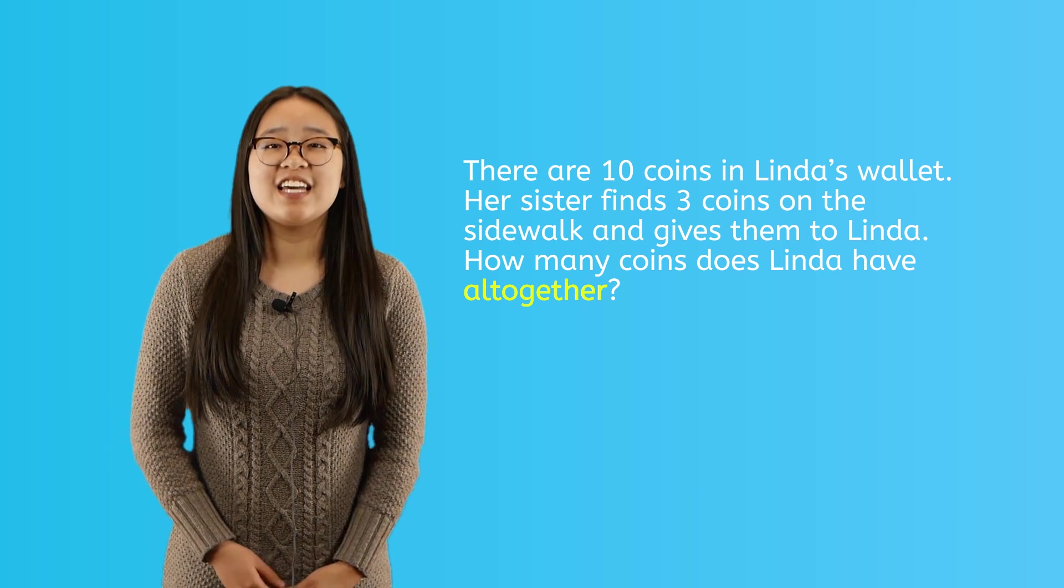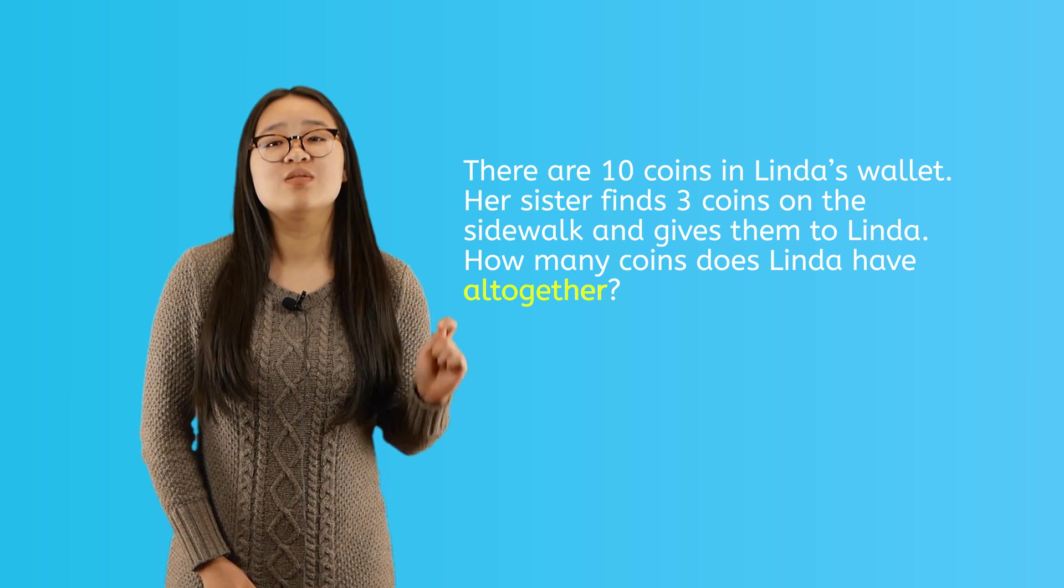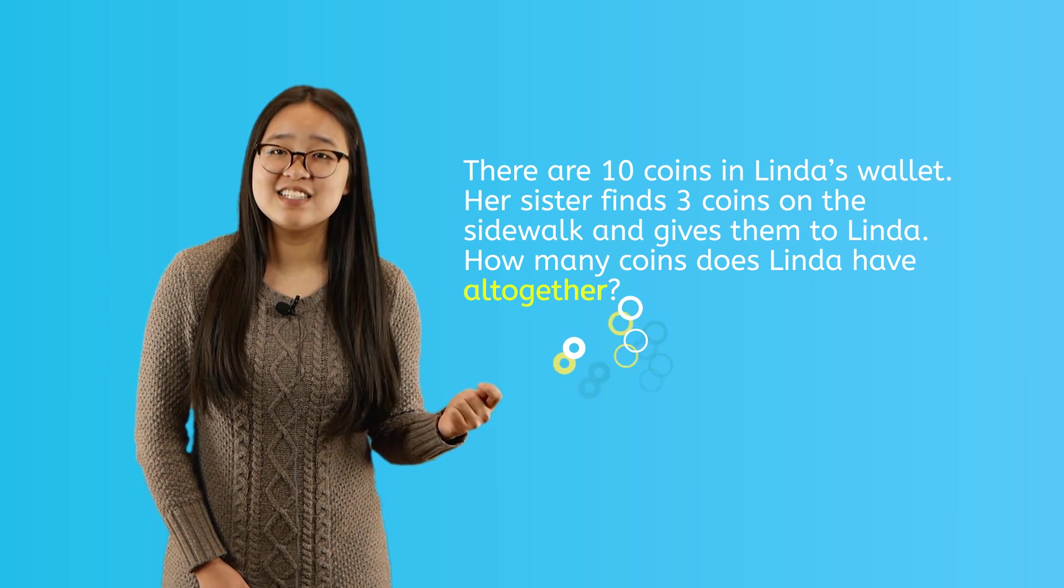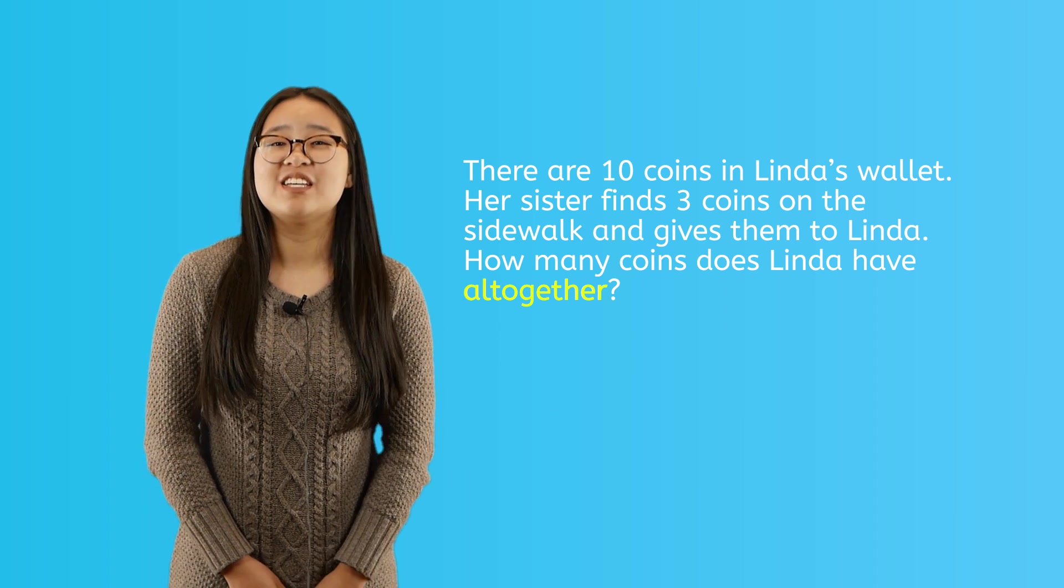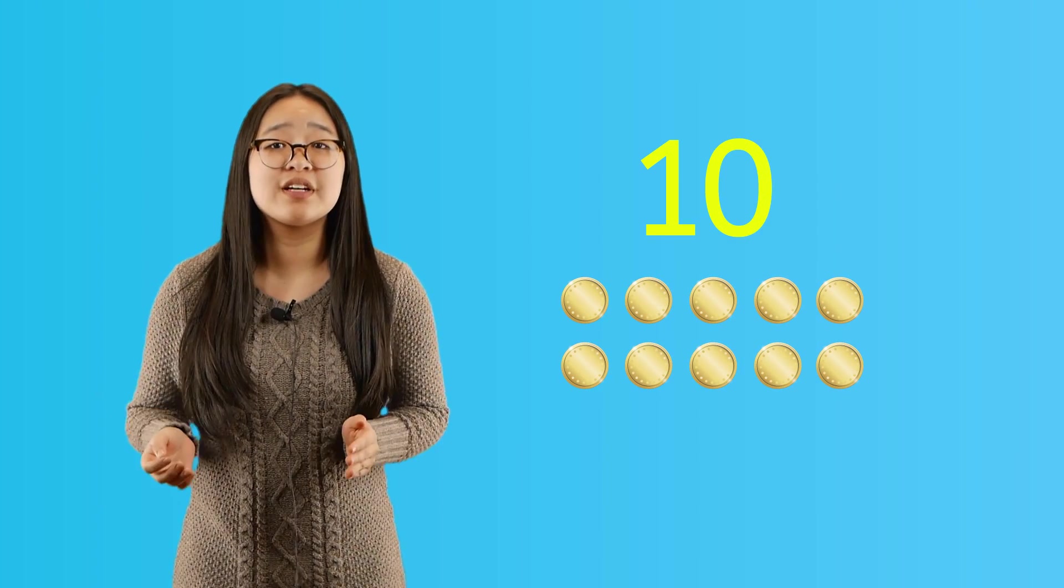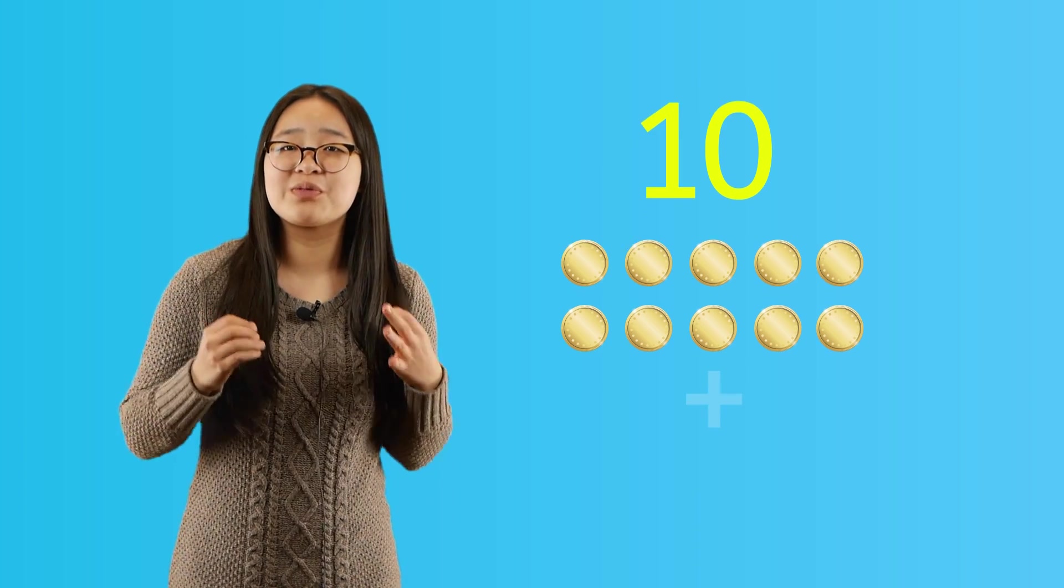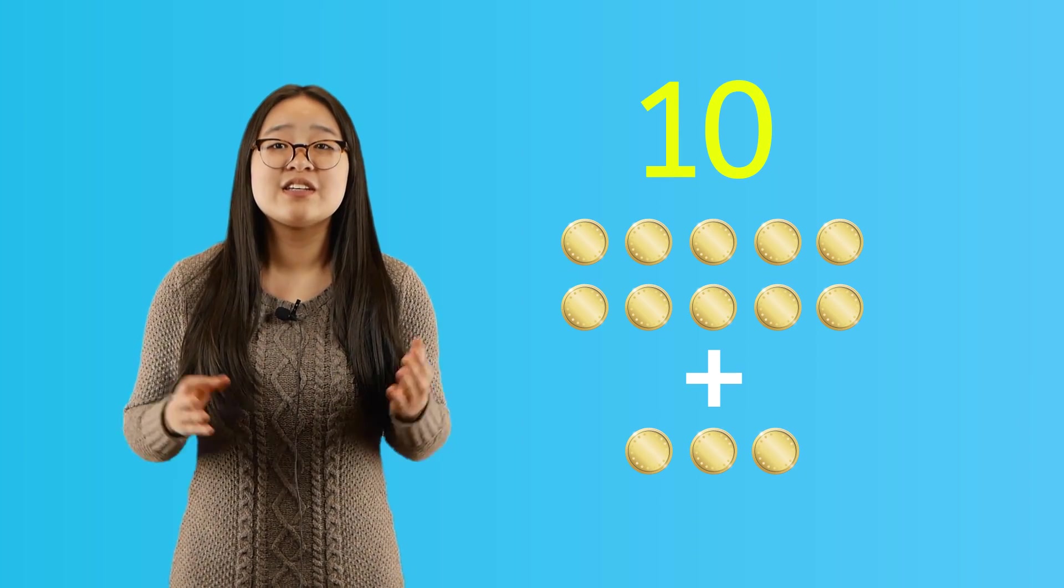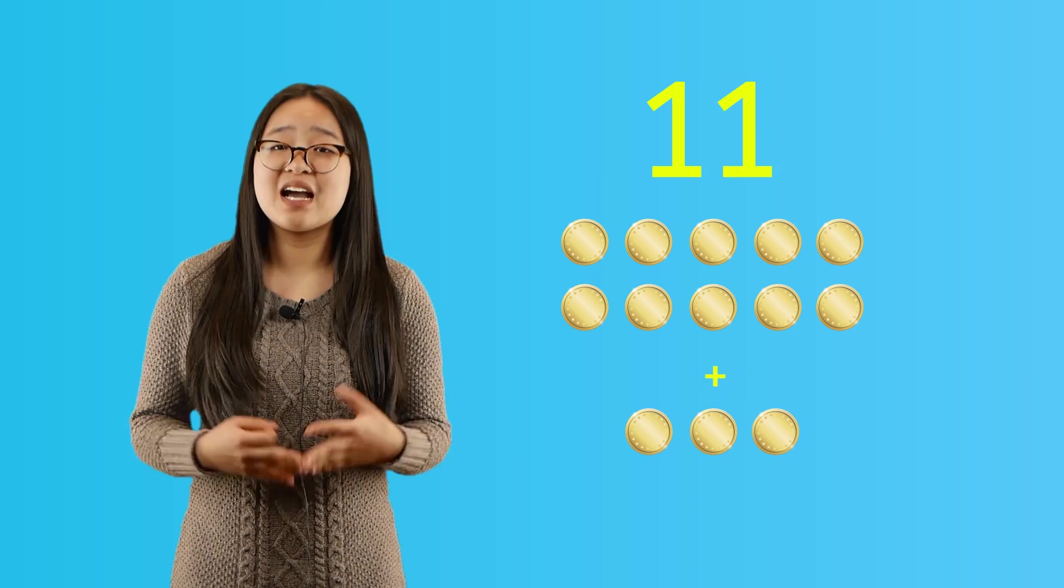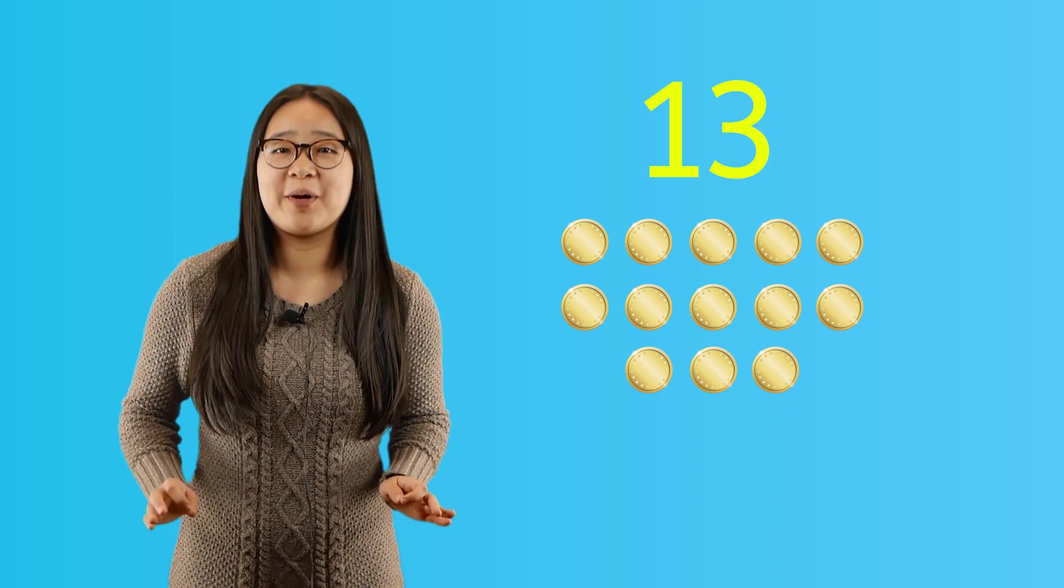We could easily add the two numbers together but we can also solve the problem by acting it out or modeling using real objects. I can use ten coins to show how many coins are in Linda's wallet. Linda's sister gave her three coins that she found. So if we add them together, we have a total of 13 coins. We just solved this problem by acting it out.